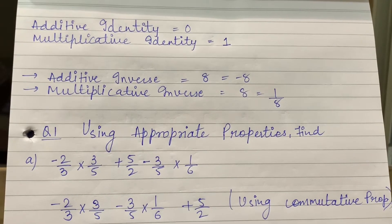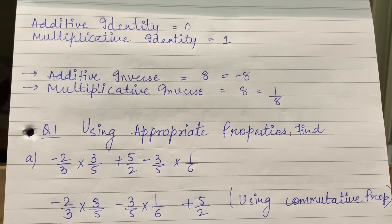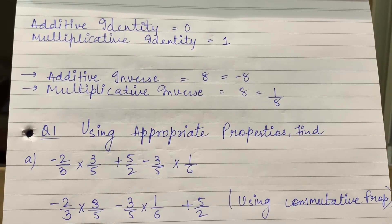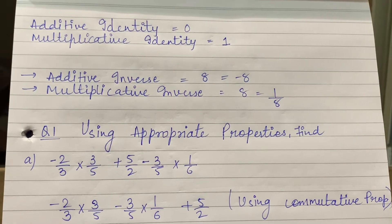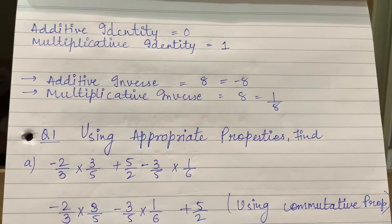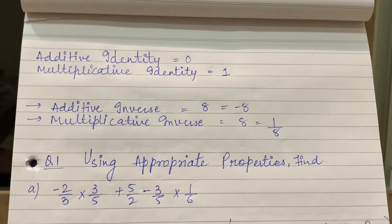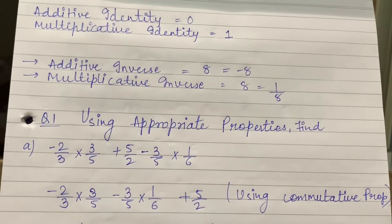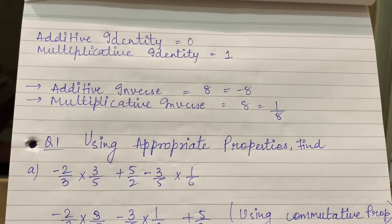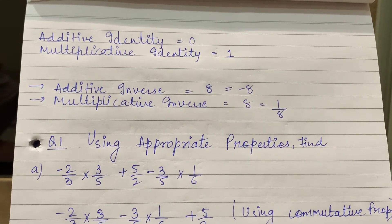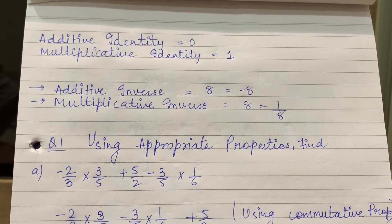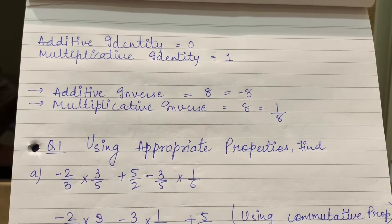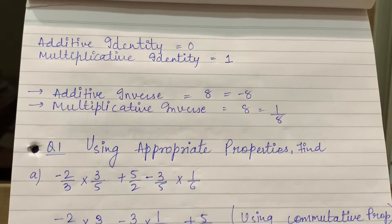Now, the last illustration: in this chapter you have to use properties to solve sums. I cannot ask you to directly calculate using LCM alone. In this chapter, you have to use properties — without properties, zero marks for the sum. You have to apply the given properties, and try so that your concepts are clear. Properties play the most important role in this chapter.